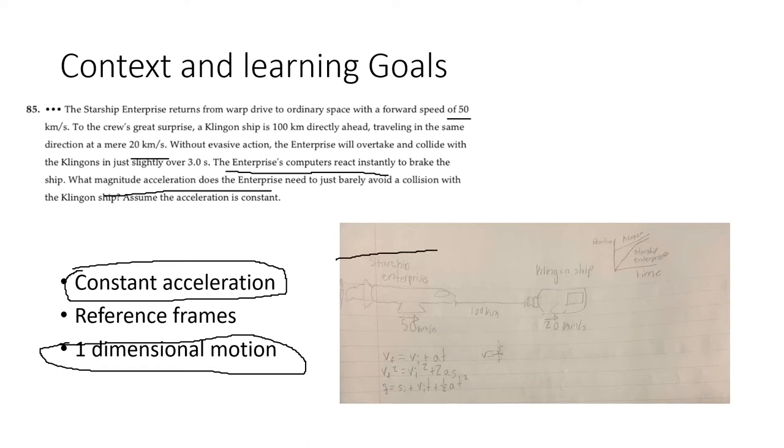Here I drew what it looks like. There's the Starship Enterprise going 50 kilometers a second, and the Klingon ship going 20 kilometers a second, with 100 kilometers between them.